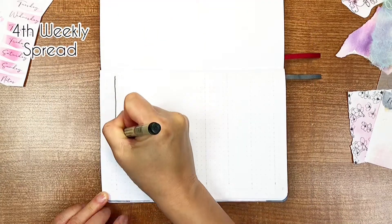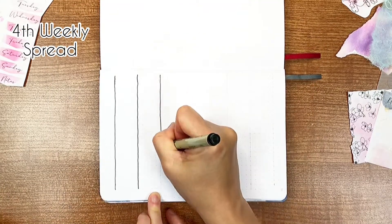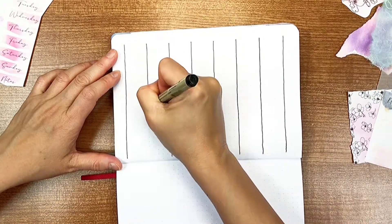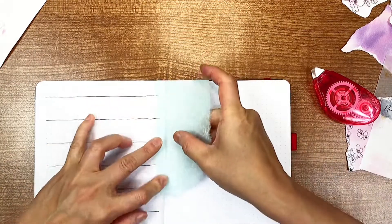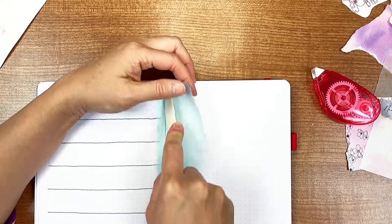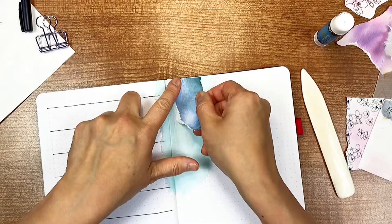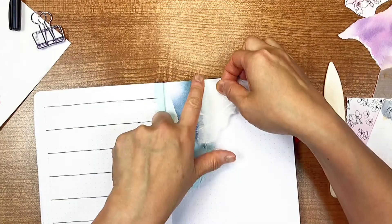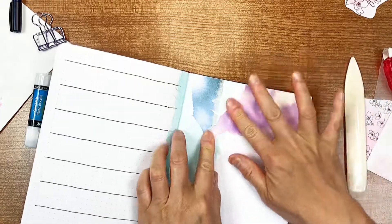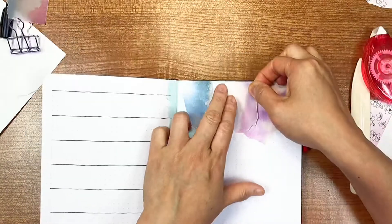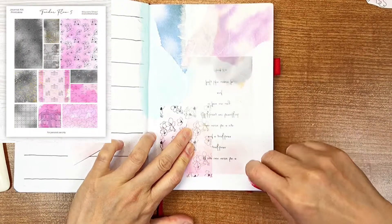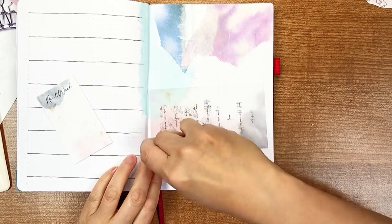Lastly, is my fourth weekly spread. This is only a one-page weekly because I want to leave space for a page with just decoration. Here, I'm using a background pattern paper to decorate the page. Then, sticking a quote on top of it.